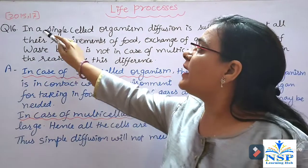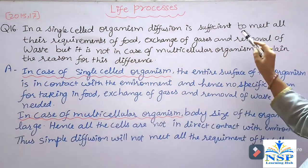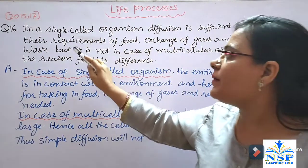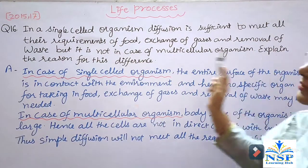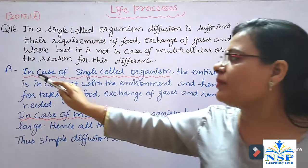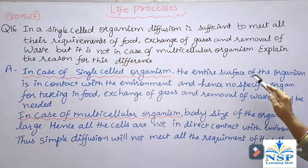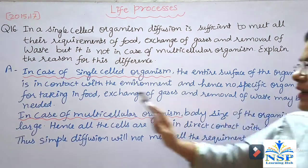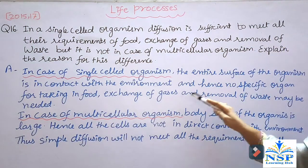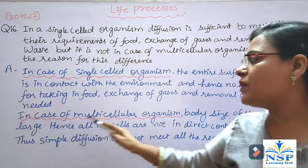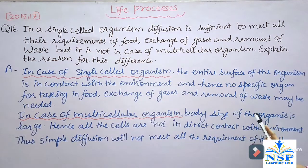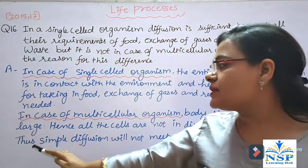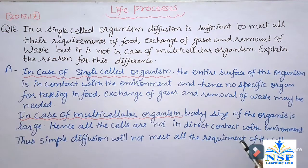Next question: In a single-cell organism, diffusion is sufficient to meet all requirements of food, exchange of gases, and removal of waste. But this is not the case in multicellular organisms. Explain the reason. In a single-cell organism, the entire surface is in contact with the environment, so no specific organ for taking in food, exchange of gases, or removal of waste is needed. In multicellular organisms, the body size is large; hence, all cells are not in direct contact with the environment, and simple diffusion will not meet all the requirements of the cells.